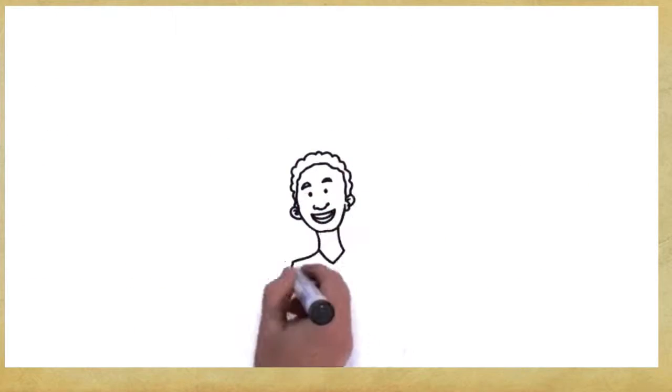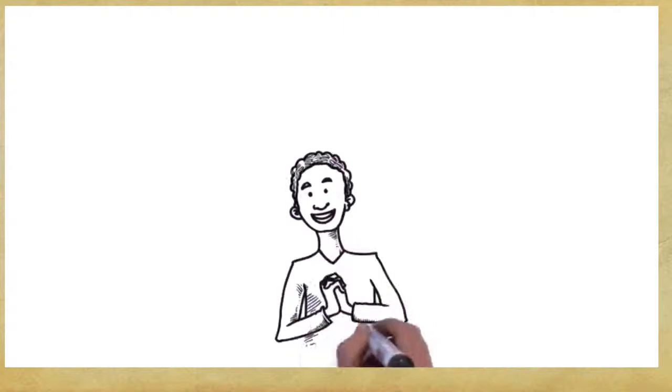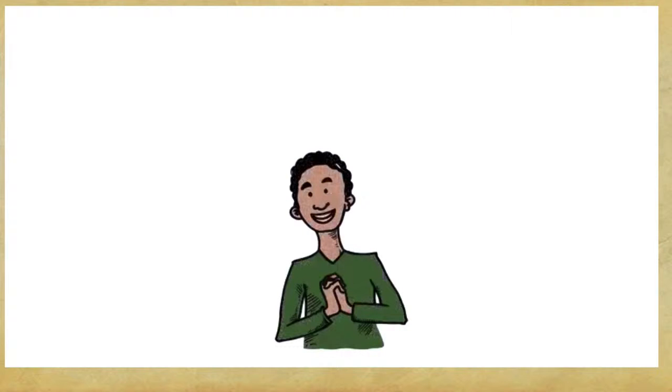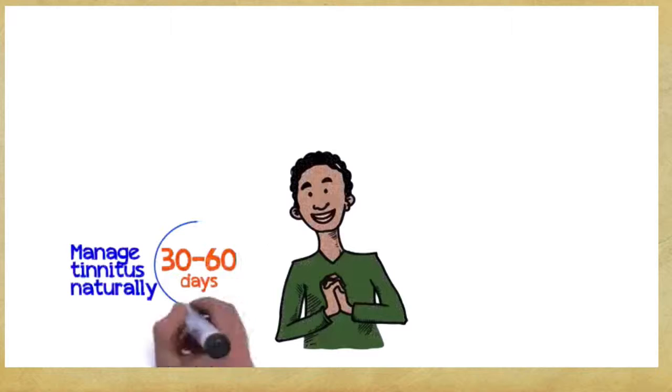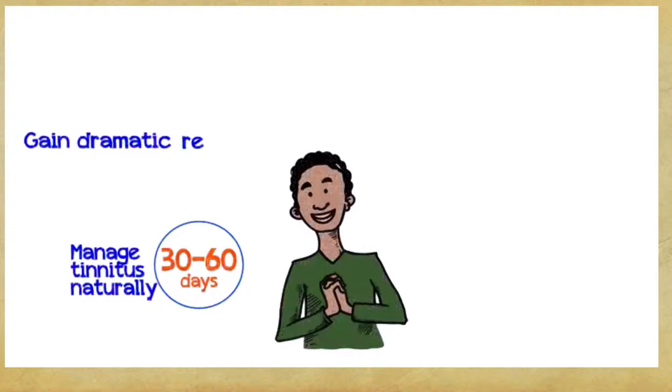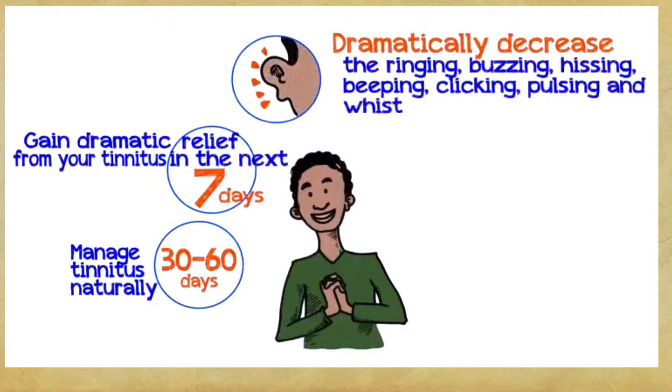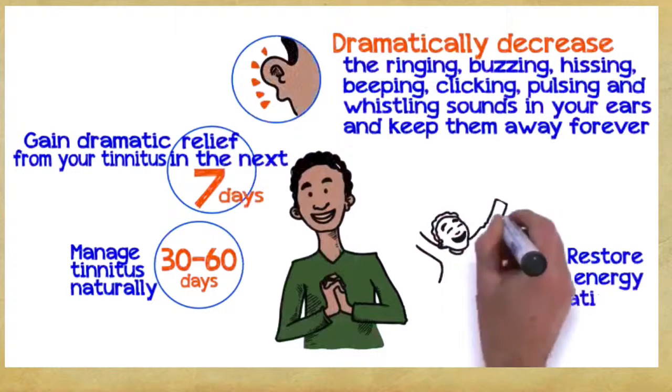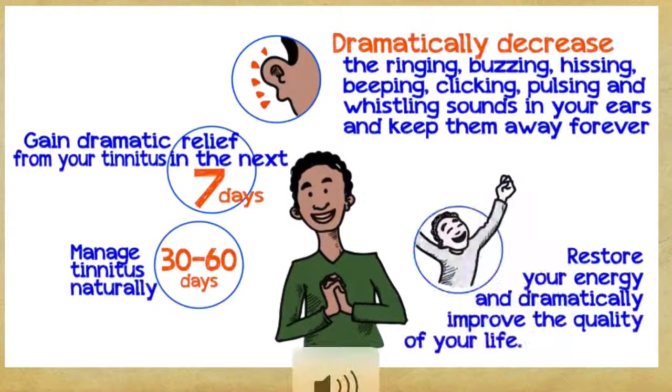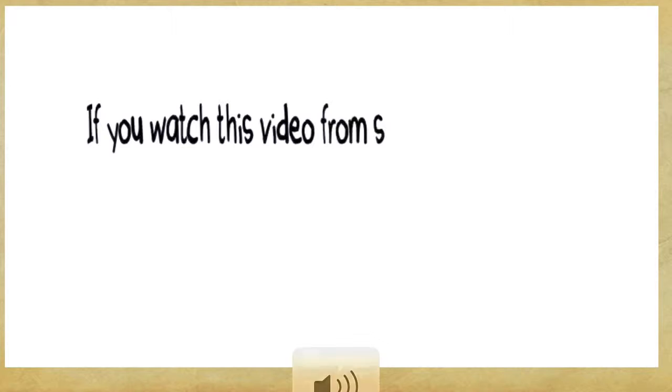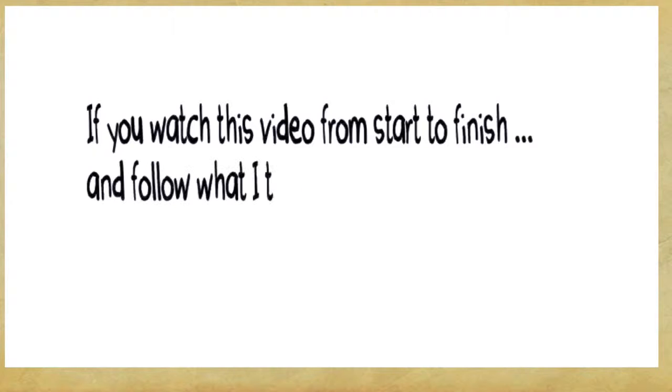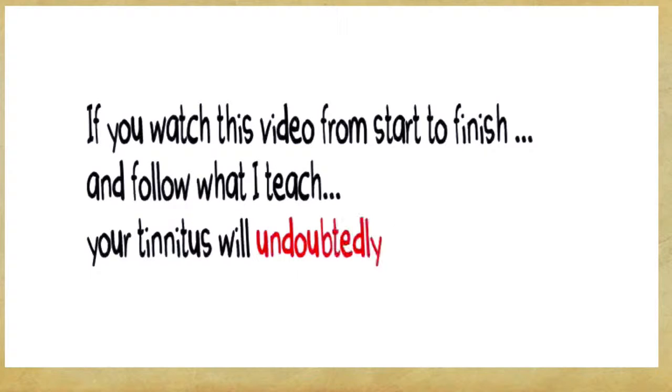So, what can you gain if you embrace these three easy principles? Well, you can manage tinnitus naturally within 30 to 60 days. Gain dramatic relief from your tinnitus within the next seven days. Dramatically decrease the ringing, buzzing, hissing, beeping, clicking, pulsing, and whistling sounds in your ears and keep them away forever. Restore your energy and dramatically improve the quality of your life, guaranteed. Let me reiterate, if you watch this video from start to finish and follow what I teach, your tinnitus will undoubtedly start to fade away.